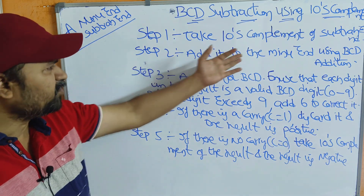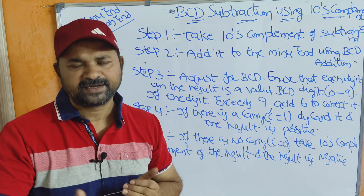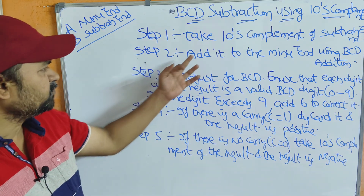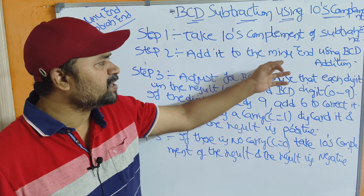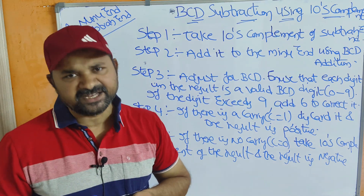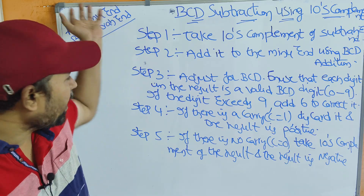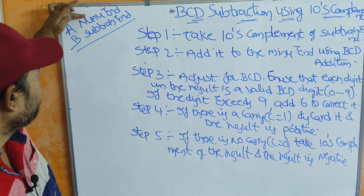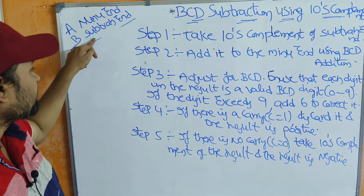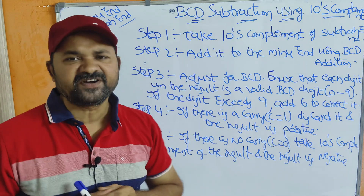We know about the 10's complement: 10's complement equals 9's complement plus 1. Step 2: Add the minuend to the 10's complement of the subtrahend using BCD addition. So we have to add the minuend with the 10's complement of the subtrahend.